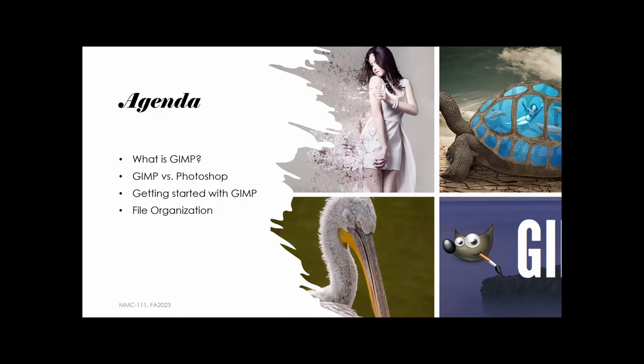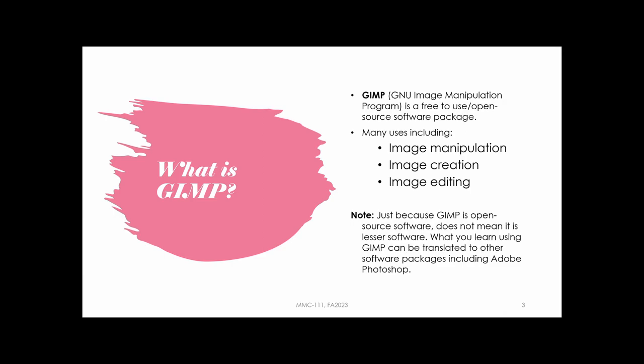GIMP stands for GNU Image Manipulation Program. This is what we call open source or free-to-use software, which means you don't have to pay anything. Students sometimes assume it must be a lesser version of Photoshop, but that's not exactly the case. With open source software, community members give up free time to build and update it, but so much work has already gone into GIMP that it is an excellent choice.